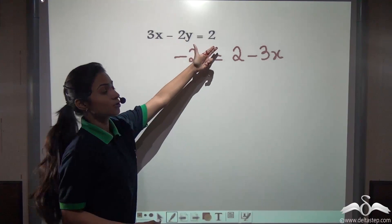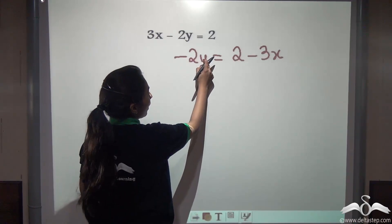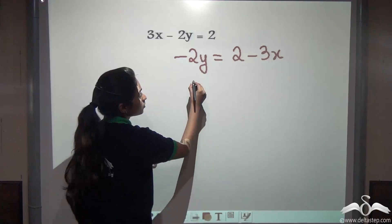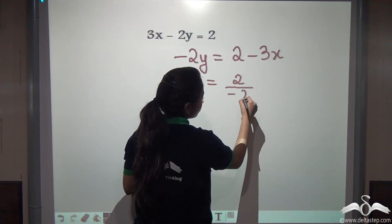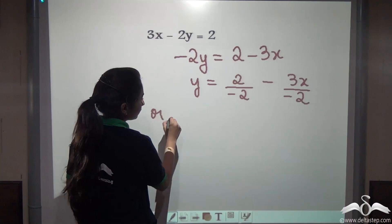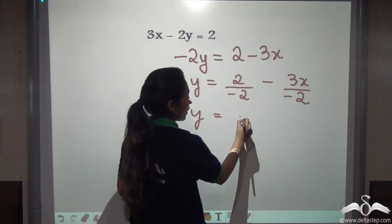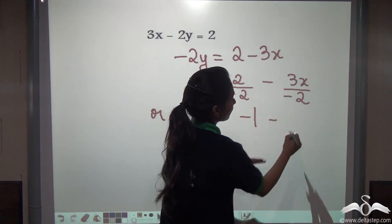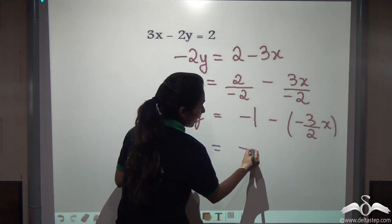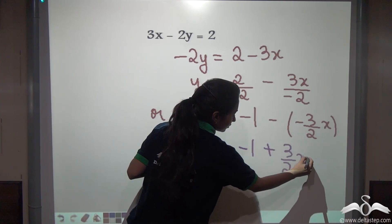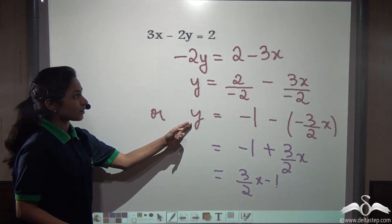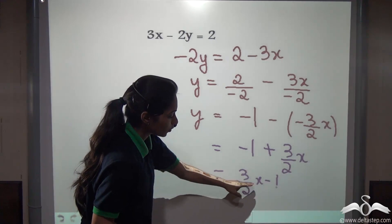We took the 3x to the other side and it became negative. Now y has a coefficient of minus 2, but we need to bring the coefficient to 1, so we divide everything by minus 2. We get y is equal to 2 over minus 2, minus 3x over minus 2, which simplifies to y is equal to (3/2)x minus 1.